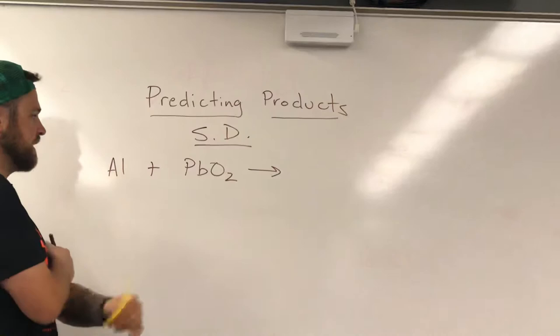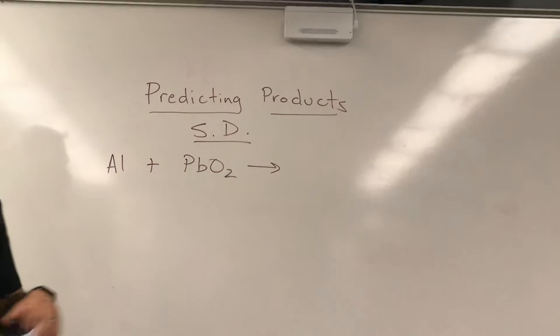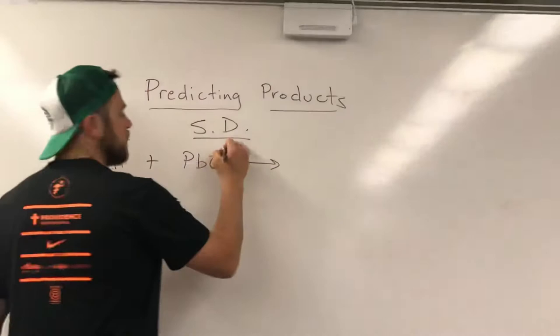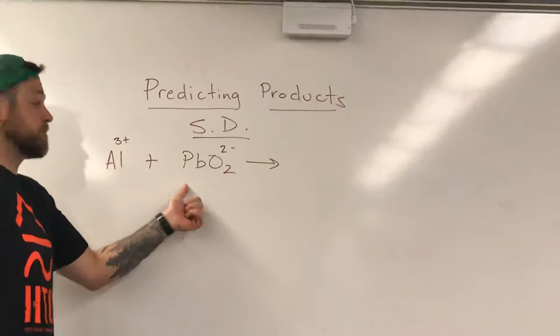We need to identify what everything's charge is so when we go to the other side it's gonna make life easier. Aluminum always has a three plus, so we can put that. Oxygen always has a two minus, so we can put that.